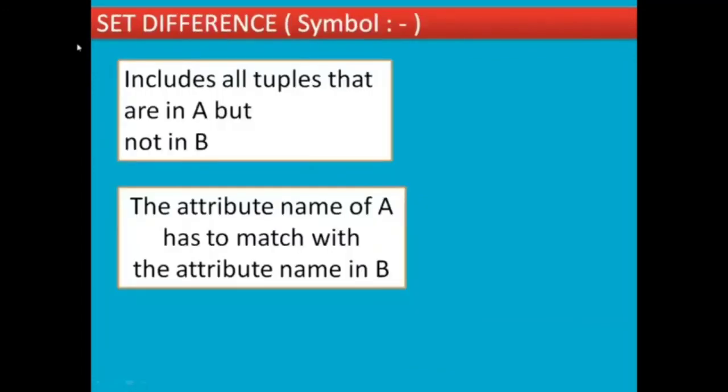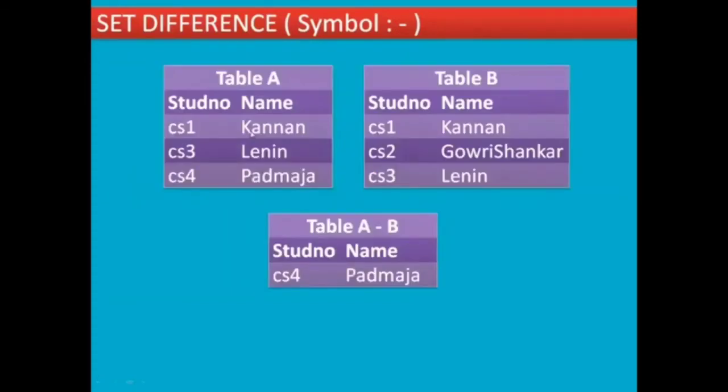Next, SET DIFFERENCE symbol is minus. A minus B gives tuples in A but not in B. Attribute names of A have to match attribute names of B. Check the output: table A minus table B gives the difference.